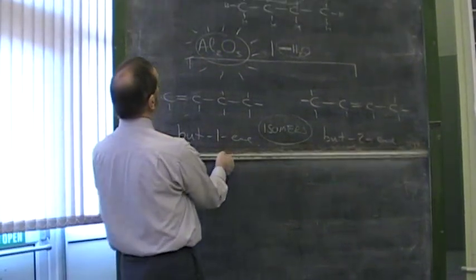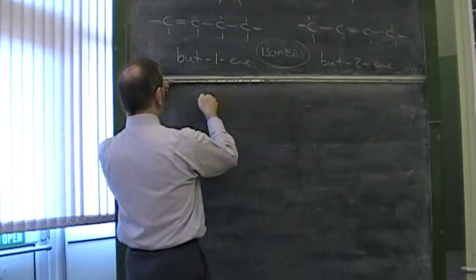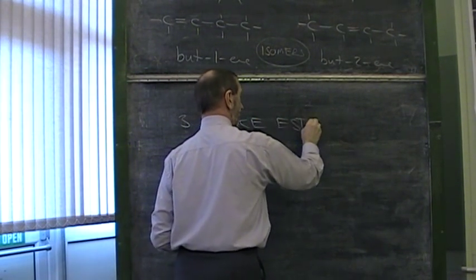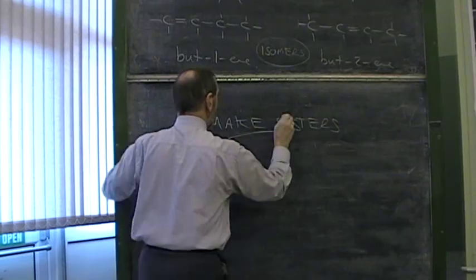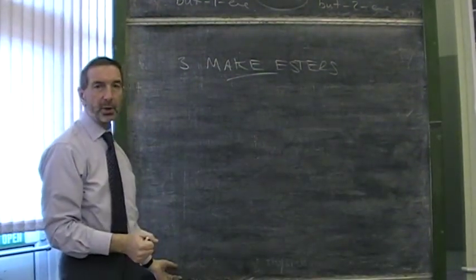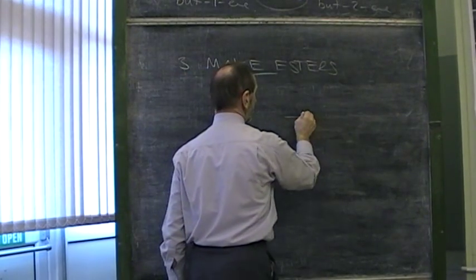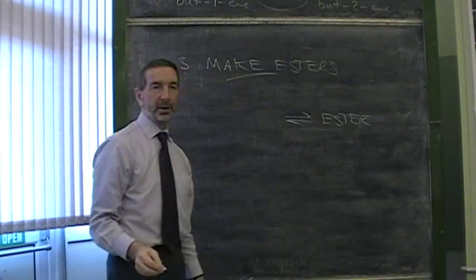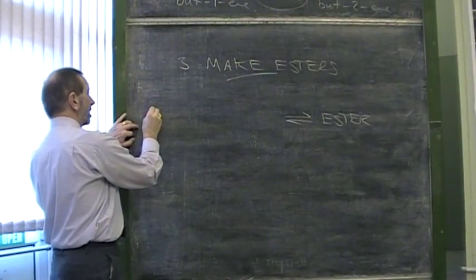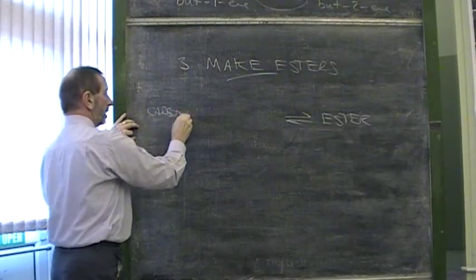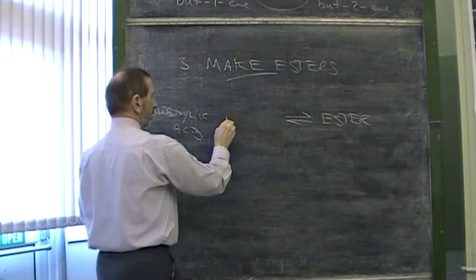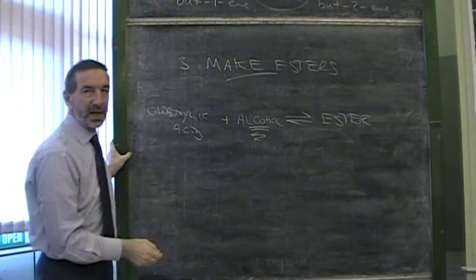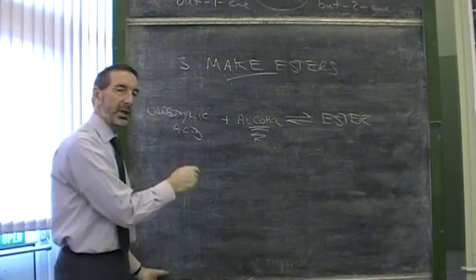What else can we use alcohols for? Another reaction? They can be used to make esters. Very briefly, because we'll need to look at this at a later date, an ester is a compound made from two reactants. One of the reactants is a carboxylic acid, and the other one of course is an alcohol. You cannot have an ester without an alcohol. We'll come to that later.